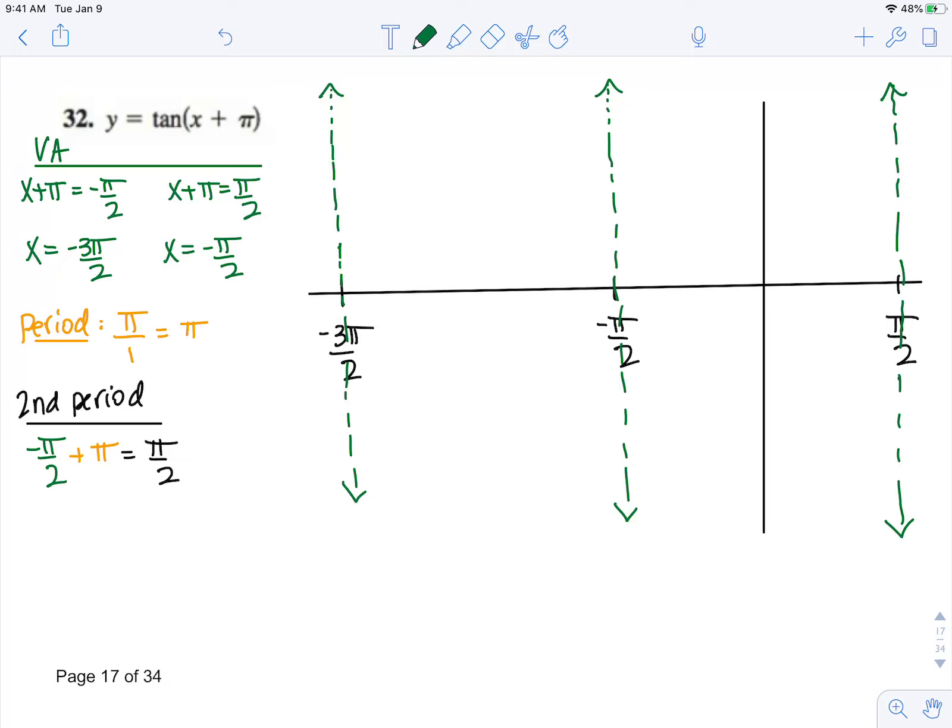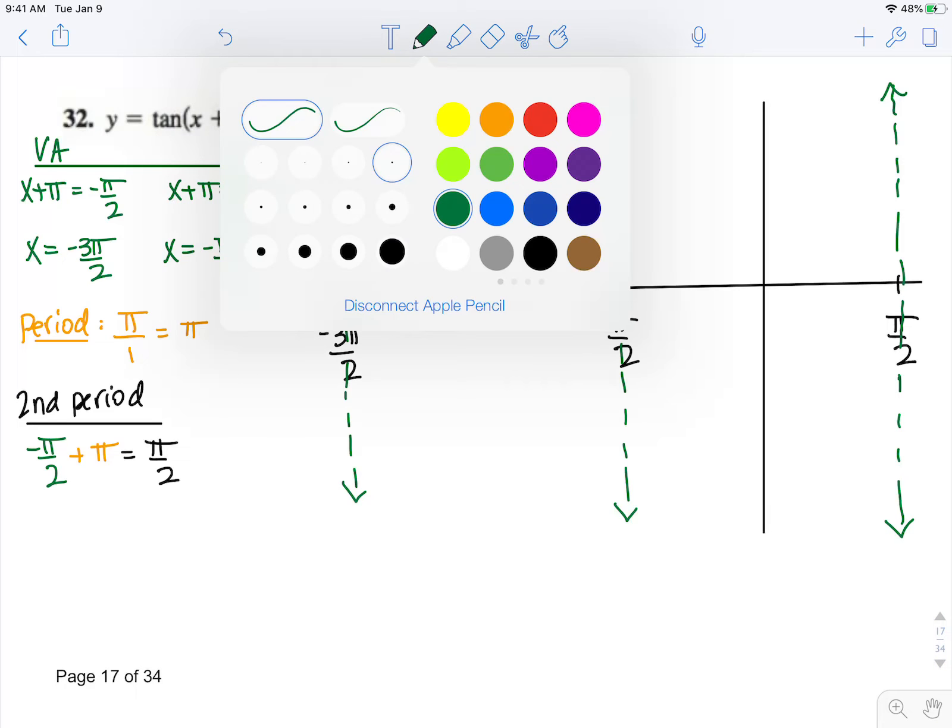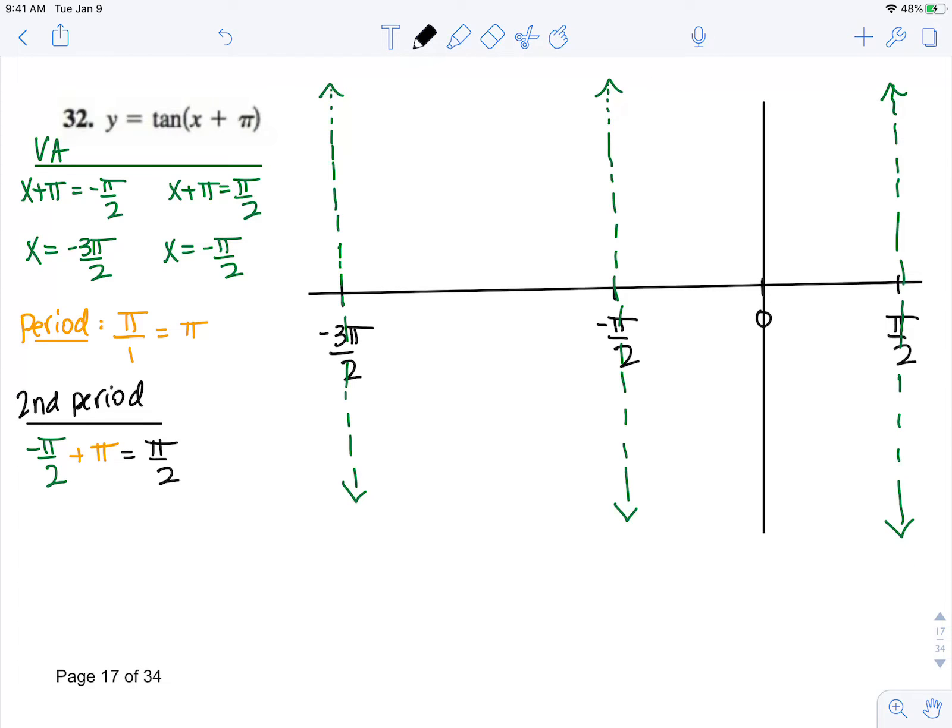So now let's split up these intervals. In the middle here is 0. This is π/4. This is negative π/4. So then we're going to split this up. This is going to be negative 3π/4, negative 4π/4, which is negative π, and negative 5π/4.